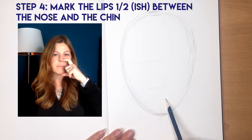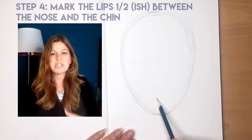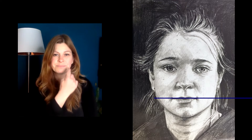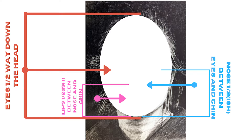Halfway from our nose to our chin, approximately, is our mouth. So now we have the basics of where our eyes, nose, and mouth are located.